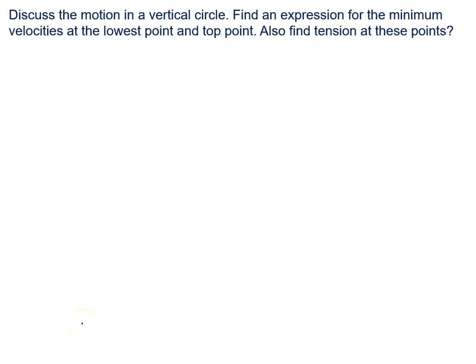We will discuss the motion in a vertical circle and find an expression for the minimum velocity at the lowest point and at the top point, and also find the tension at the edge point. The motion is considered to be non-uniform because vertical circle motion is non-uniform due to gravity — the velocity and tension of the object will differ in magnitude at different directions.